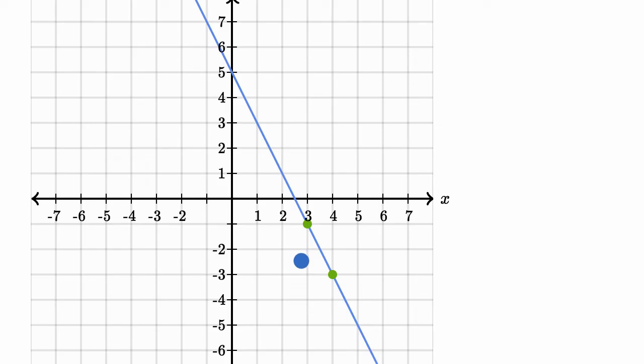Because remember, slope is change of y over change in x. So you could either say you have a positive change in y of two, when x has a negative one change, or you could think of it when x has a positive one change, y has a negative two change.